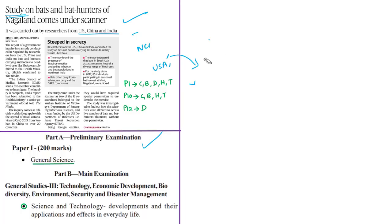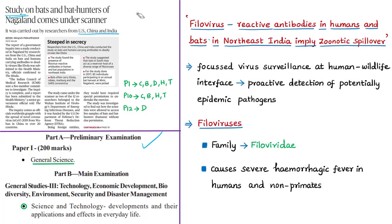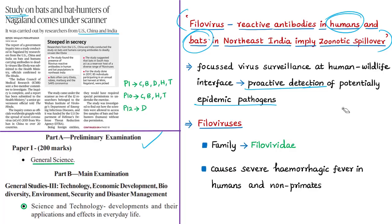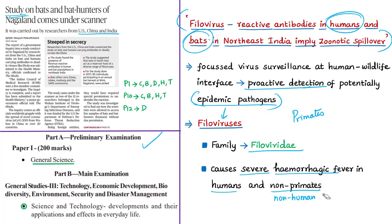The study is titled 'Filovirus Reactive Antibodies in Humans and Bats in Northeast India Implying Zoonotic Spillover.' It was conducted among humans and bats because focused virus surveillance at human-wildlife interfaces enables proactive detection of potentially epidemic pathogens. One such pathogen with epidemic potential is filoviruses, belonging to the family Filoviridae. These filoviruses can cause severe hemorrhagic fever in humans and non-human primates — primates being the group containing species related to lemurs, monkeys, apes, and humans.